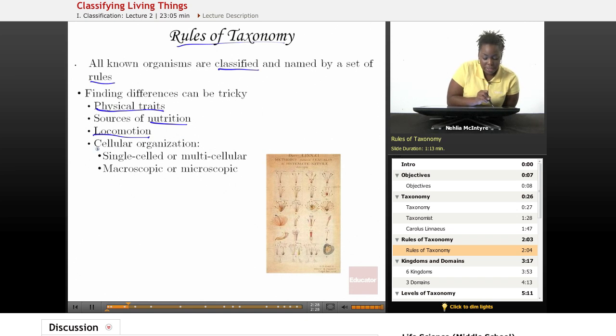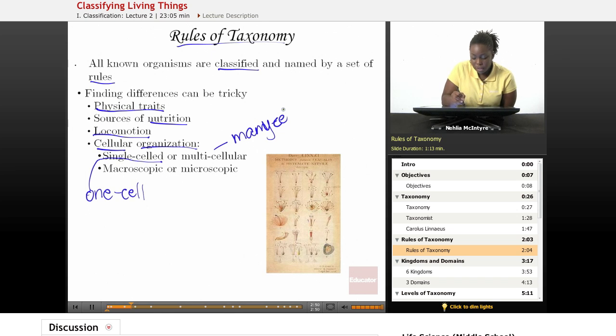They can also be classified by cellular organization, meaning all living things are made of cells. And so if that organism is single-celled, meaning it's only made of one cell, or that organism is multicellular, and that just means that organism is made of many cells, that's another way to classify organisms.